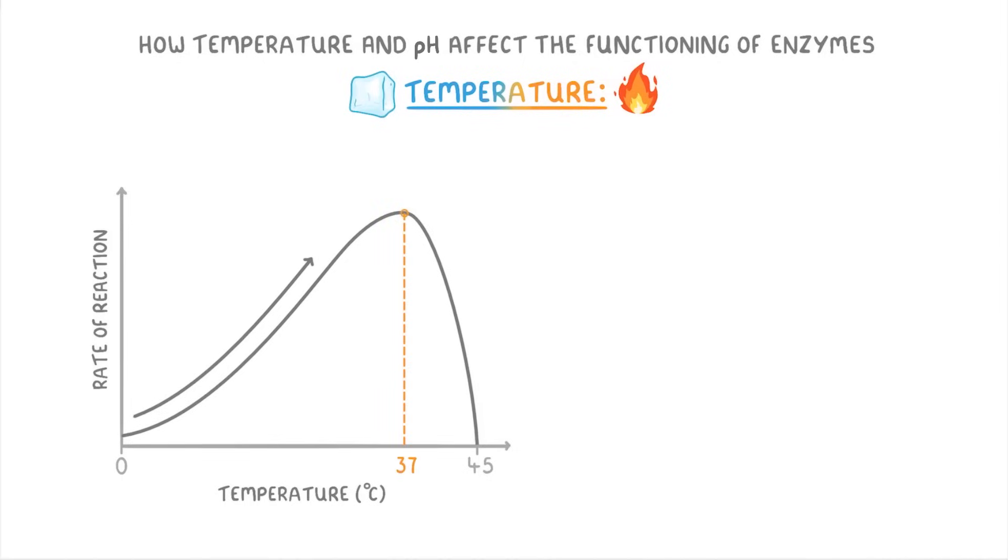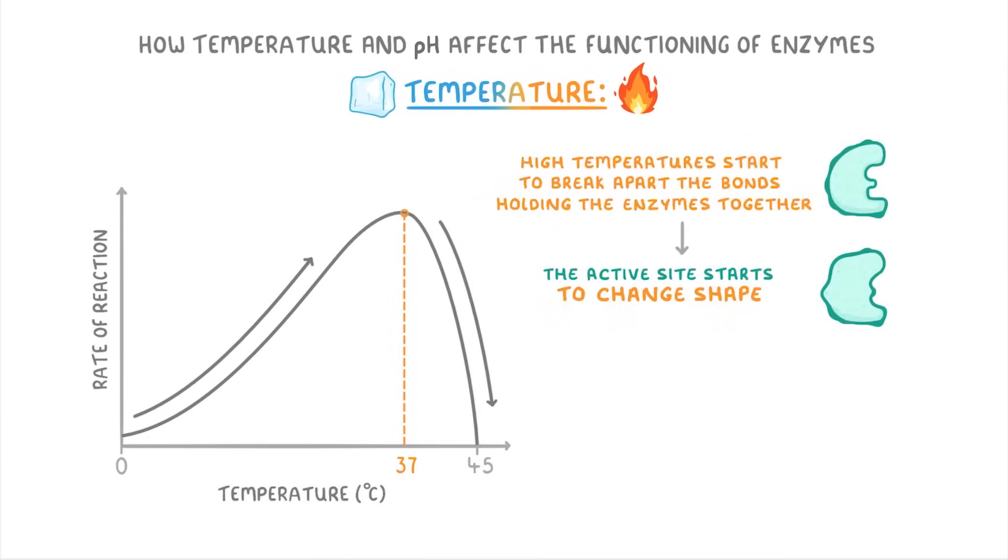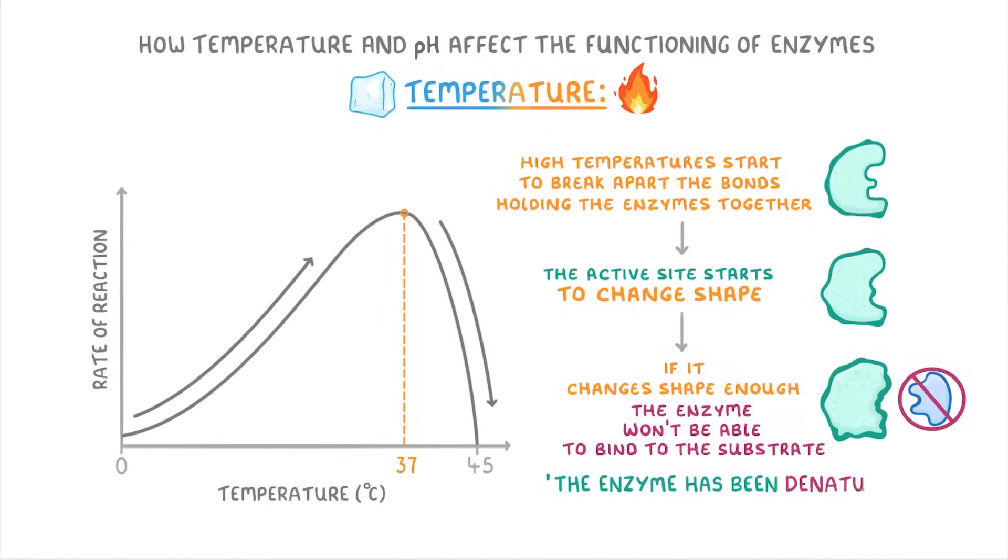After about 37 degrees though, the rate starts to drop rapidly. This is because the high temperatures start to break some of the bonds holding the enzymes together, and so the active site starts to change shape. If it changes shape enough, then the enzyme won't be able to bind to the substrate and catalyze the reaction anymore, and at that point, we say that the enzyme has been denatured.